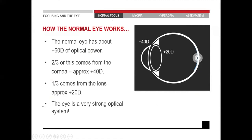The first thing we're going to look at is a normal eye. So this is a picture of an eye — the front part is over here and the back is over there. We can see the cornea and the lens. A normal eye has approximately a power of plus 60 diopters. The cornea accounts for two-thirds of it at plus 40 diopters, and the lens accounts for one-third at plus 20 diopters. So it's a very strong optical system.